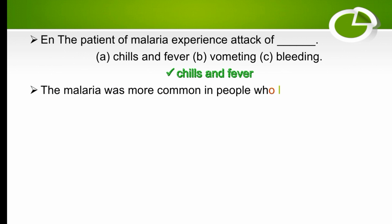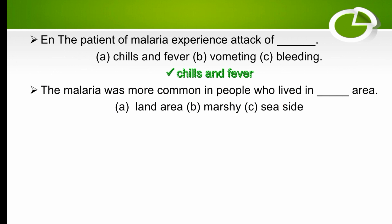Malaria was more common in people who lived in which area? The options are land area, marshy area, or seaside. Malaria was more common in people who lived in a marshy area, so the right option is marshy.